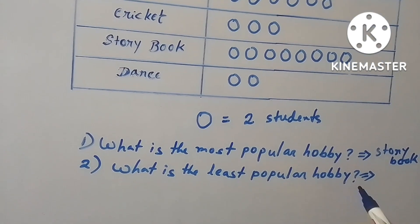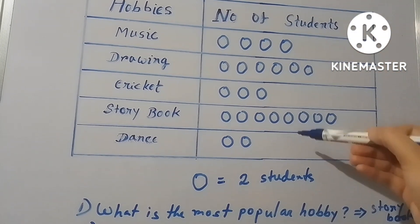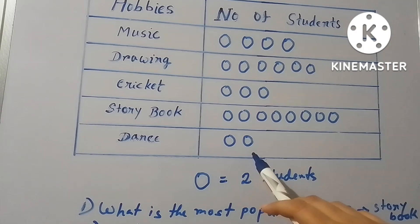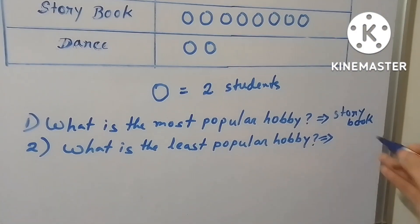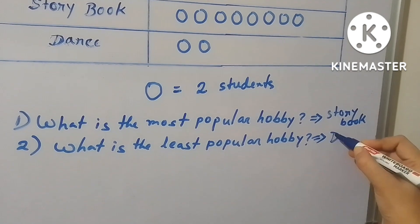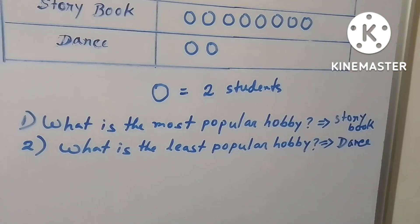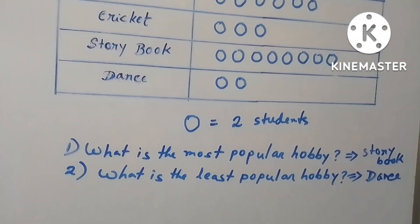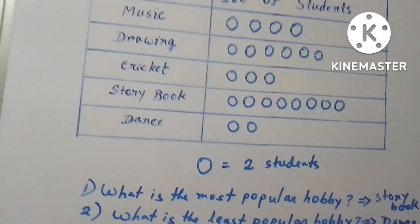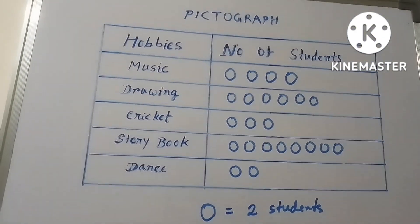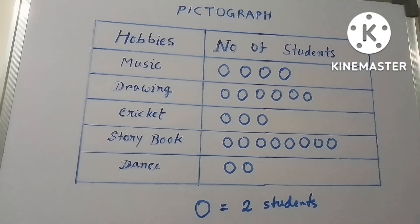Now let's find the answer to the second question — what is the least popular hobby? You can see that against dance there are two circles, meaning two multiplied by two equals four students. So the answer is dance. This way we can solve all the important and interesting questions very easily from this pictorial representation.